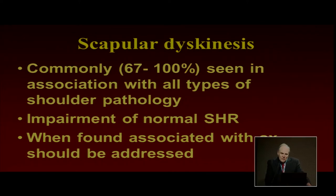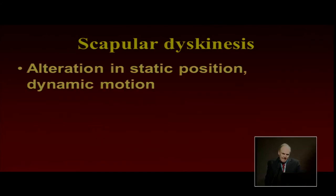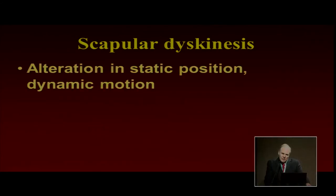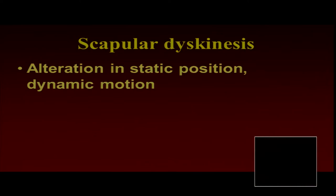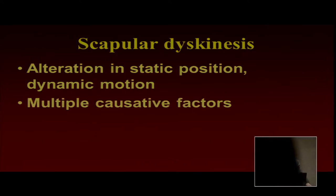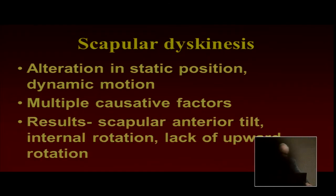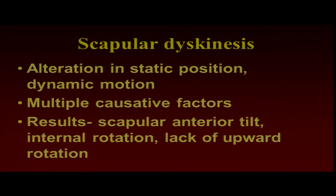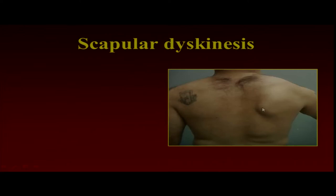The consensus was: when it's found associated with symptoms, it should be addressed as part of the comprehensive treatment. This is an alteration both in static position and dynamic motion. Dynamic motion is probably most important. There are multiple causative factors, and you have to be smart enough to figure out what they are. The result is that they get anterior tilt, internal rotation, and lack of upward rotation — a protracted scapula.